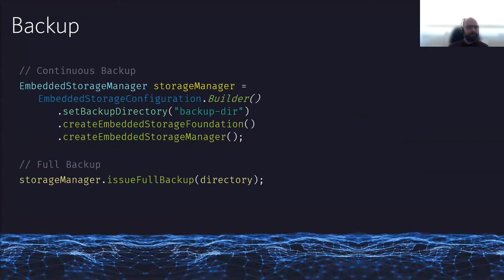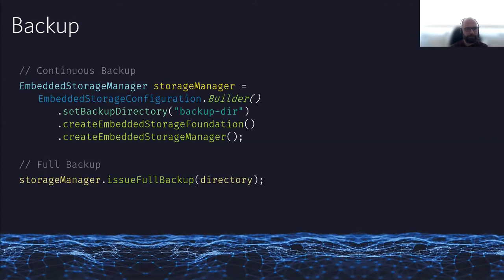For backup, MicroStream provides two different kinds: a continuous backup, which backs up everything you store in parallel, and a full backup that writes the whole database to a different directory (which can be a long-running operation). Most projects use continuous backup — just use a different backup directory or storage target. A common pattern in the cloud is a local mapped file storage for live data and a backup writing to an S3 bucket or different blob storage on another cloud provider. That's a good way to keep your data safe.